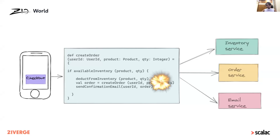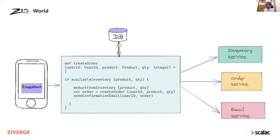What happens if the machine running the code goes down? If that happens particularly after a critical step — like deducting the item from the inventory — the system ends up in an inconsistent state. Generally, to solve this, we maintain the state in another replicated database, and the state needs to be updated frequently based on the actions performed inside this transaction.